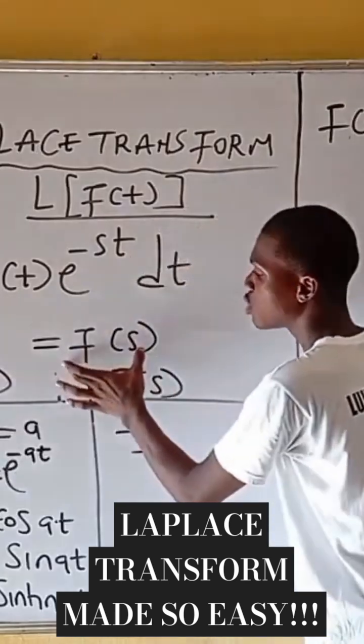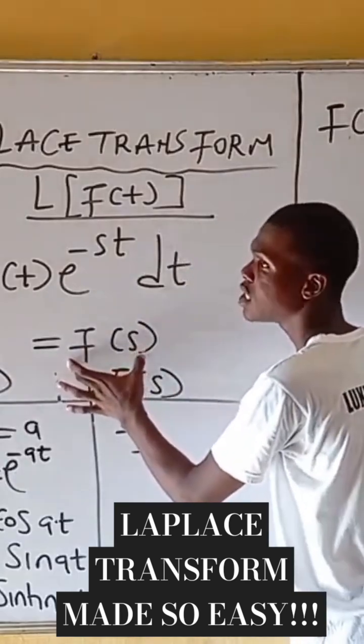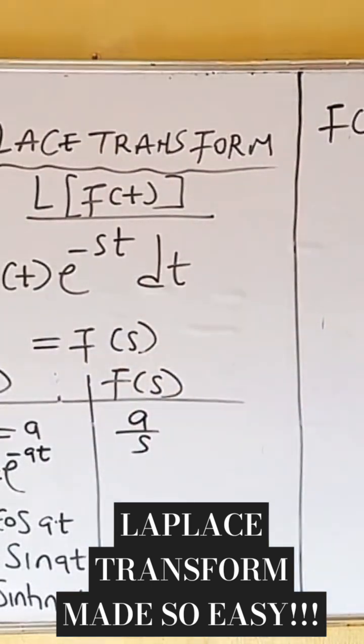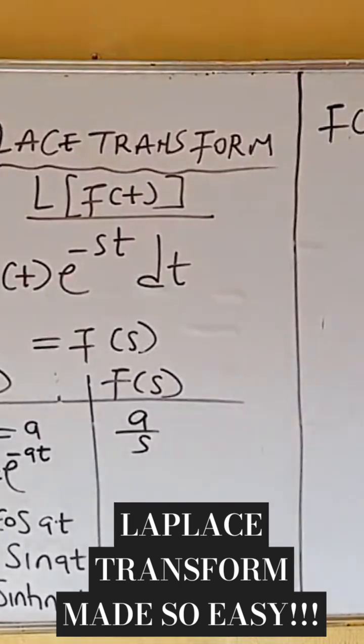F of s. You obtain f of s. Now the idea is that initially if I'm having a function combined with t, in this case I'm having exponential negative at.